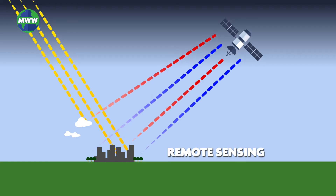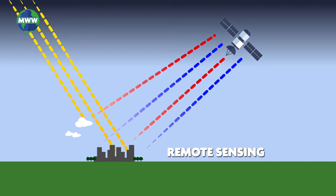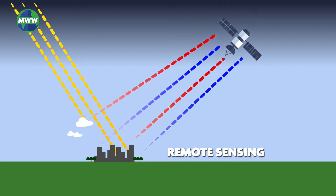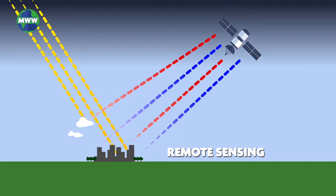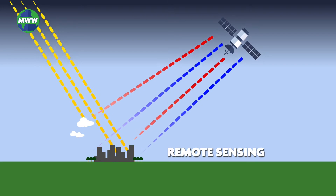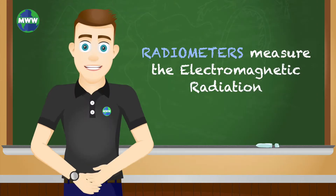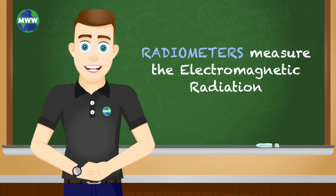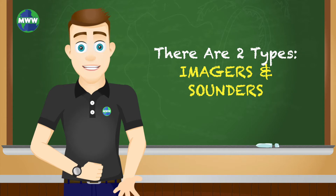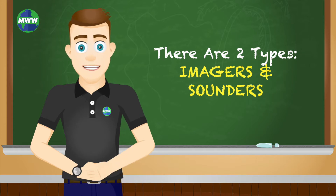Remote sensing devices gather information by sensing energy waves or electromagnetic radiation coming from the Earth's surface. Radiometers measure the electromagnetic radiation. There are two types: imagers and sounders.